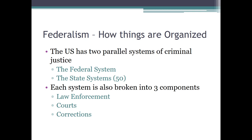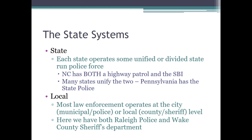How are we organized? It's federalism. The United States has two parallel systems of criminal justice: the federal system and the state system. Each one of these is broken into three principal components: law enforcement, courts, and corrections. The states have a few options. I'll refer very often, unlike your book, to North Carolina's system. Each state will typically either unify or divide its state-level police force.